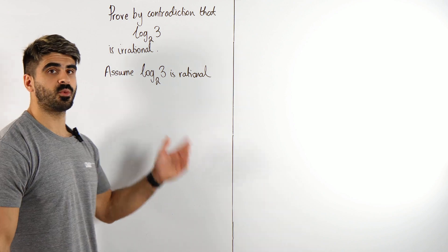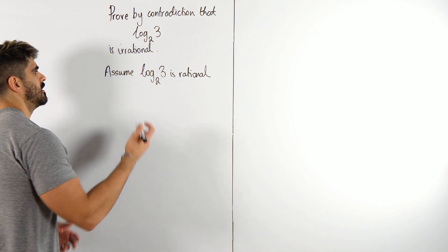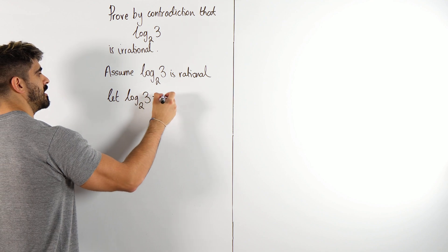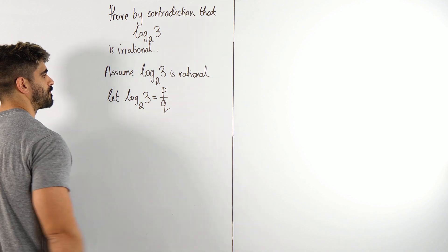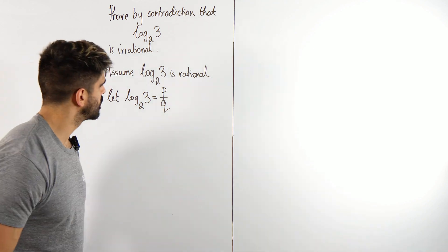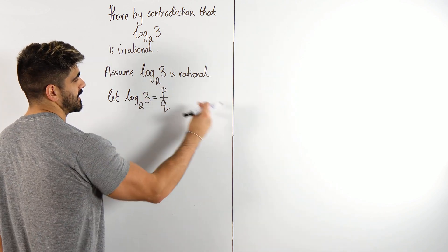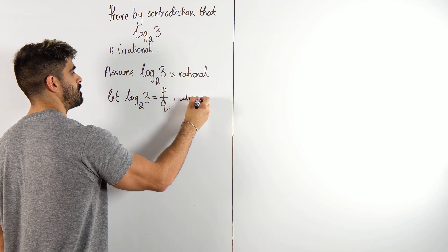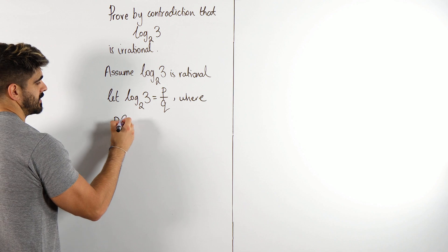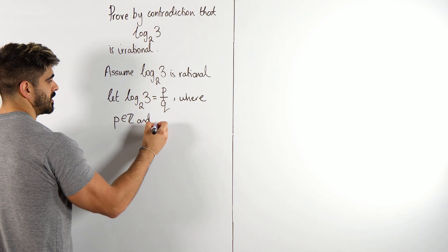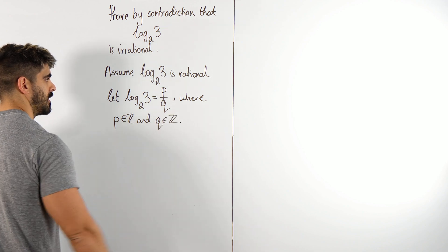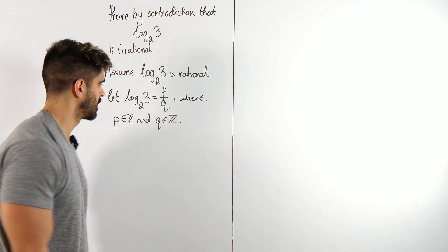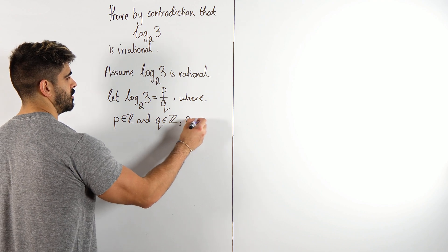Now you really have to define what you mean by a rational number. We're going to let log base 2 of 3 equal p divided by q. But we can't just say p and q. You need to explain or really make it clear that p and q are integers. So we're going to say where p is an integer and q is an integer. Now what else has to be true? The denominator cannot be 0. q cannot equal 0.